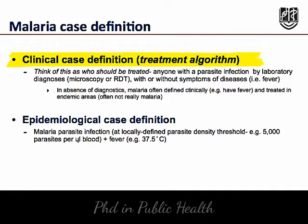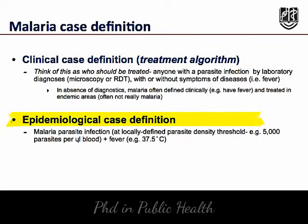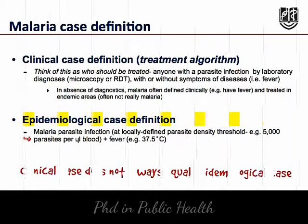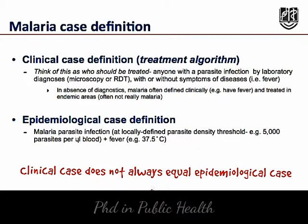The clinical case definition of malaria is anyone with a parasite infection by laboratory diagnosis, with or without symptoms of disease — we can think of this as anyone who should be treated. The epidemiological case definition of malaria is anyone with a malaria parasite infection. It is important to remember that clinical cases do not always equal epidemiological cases.